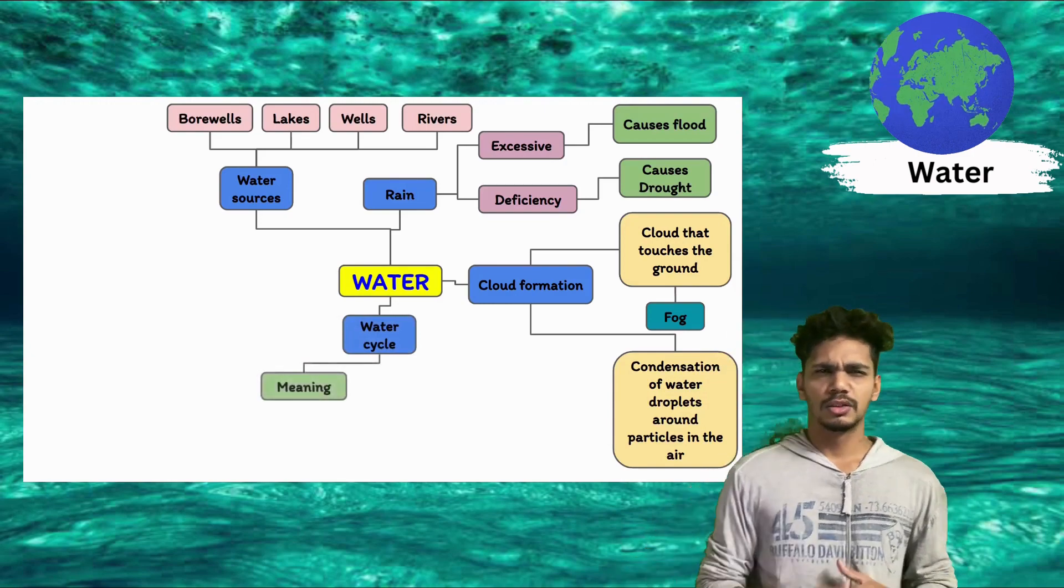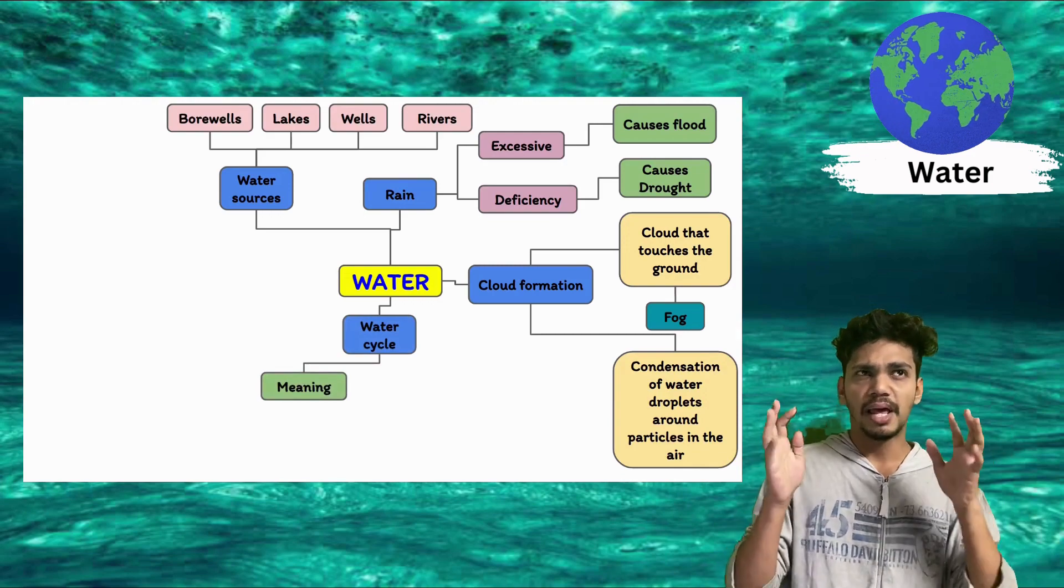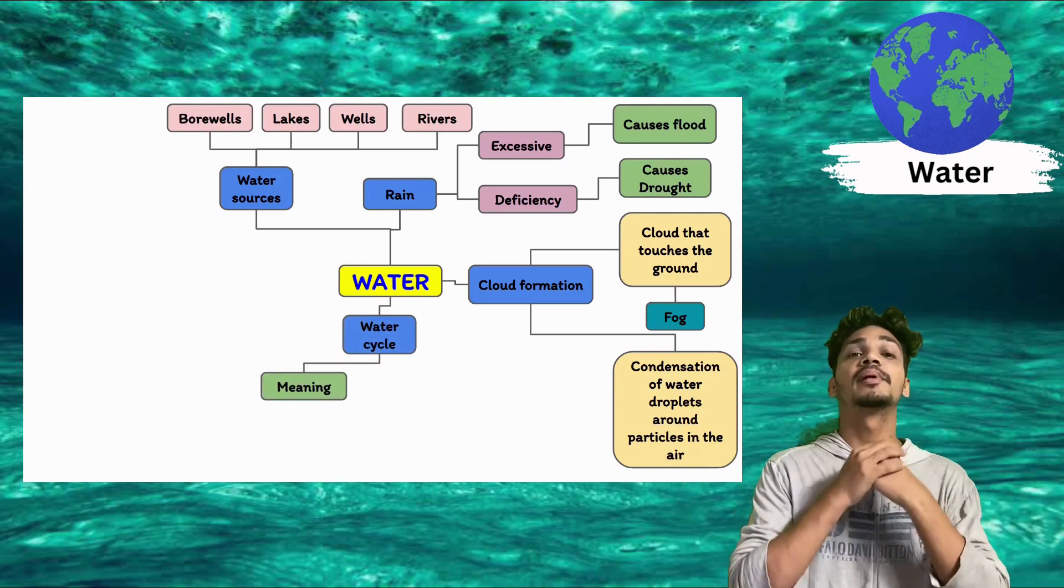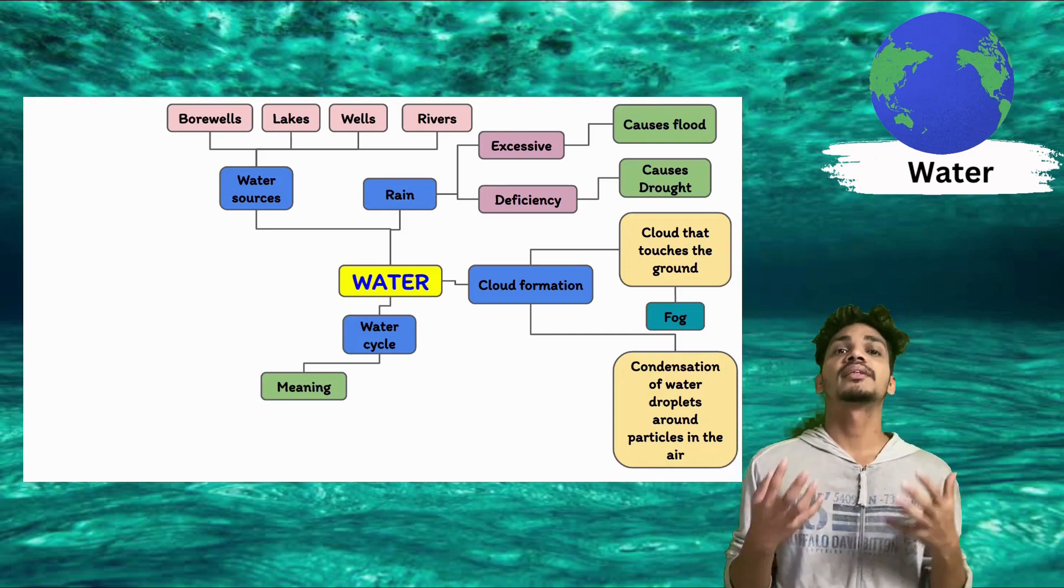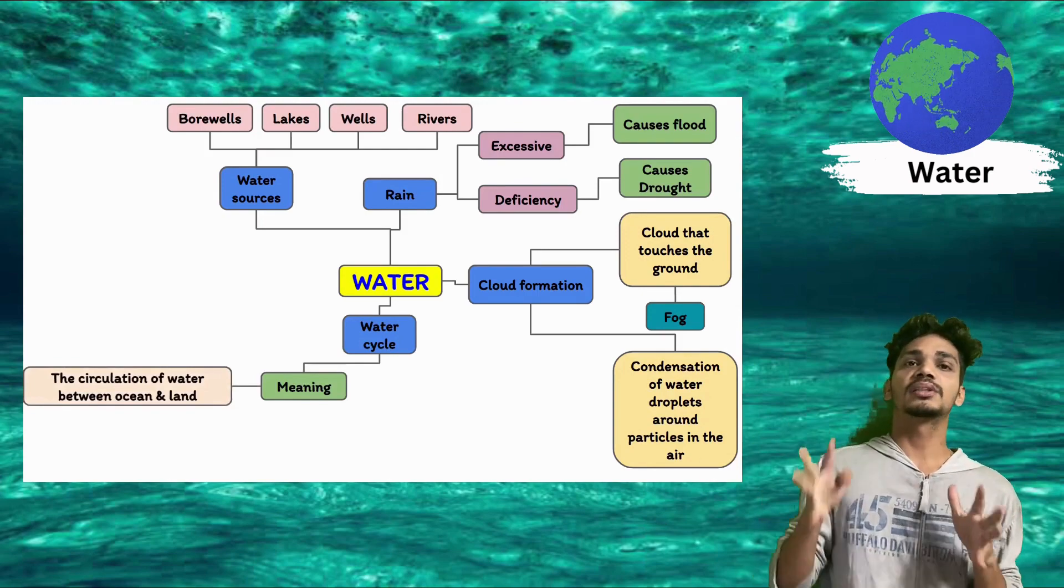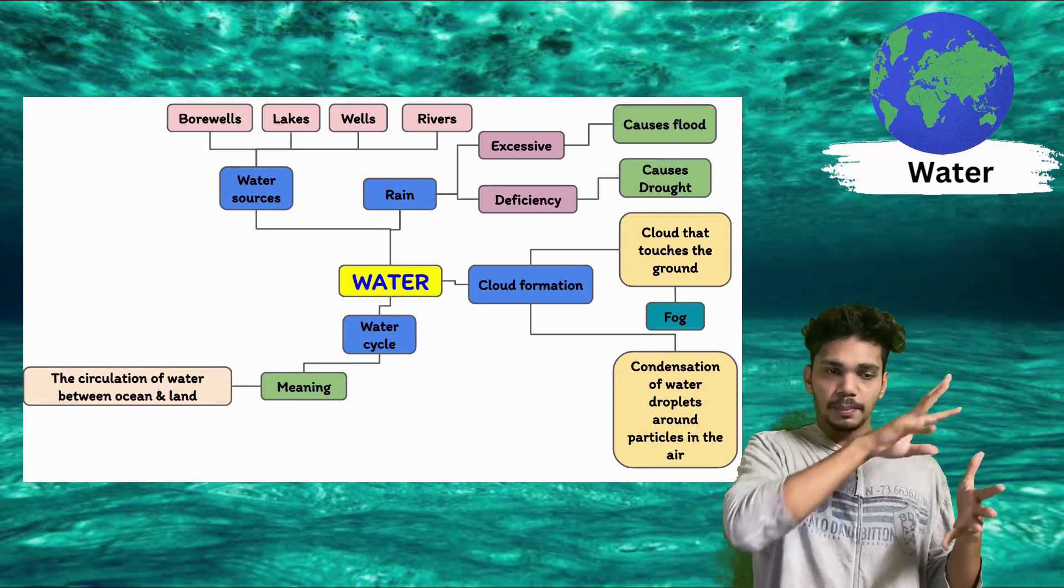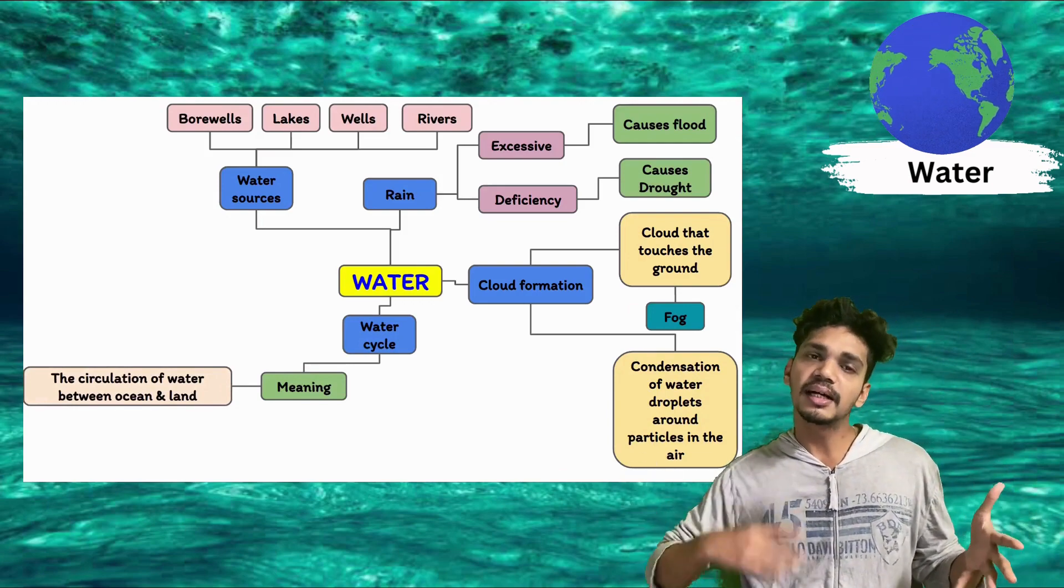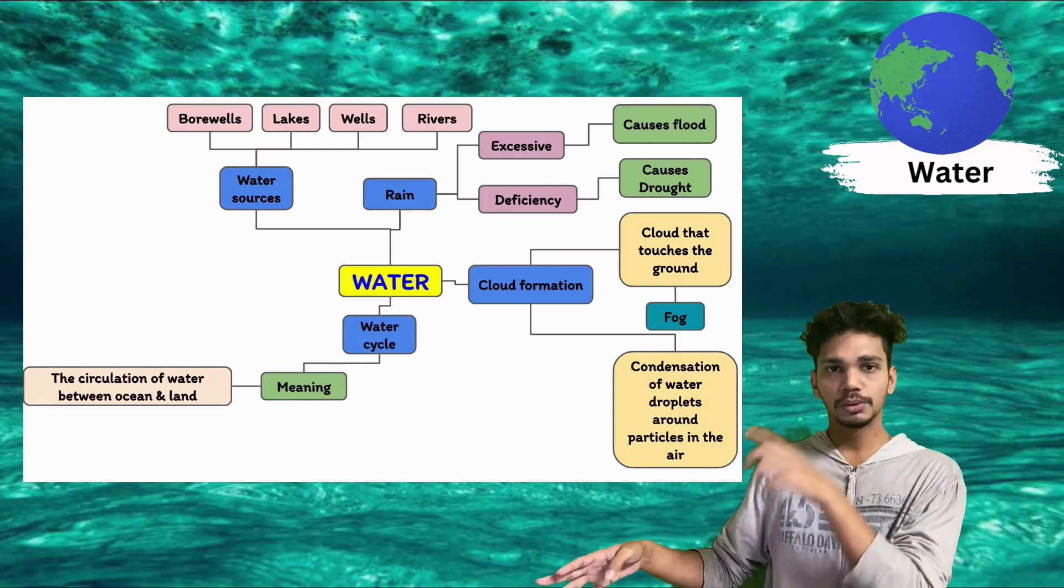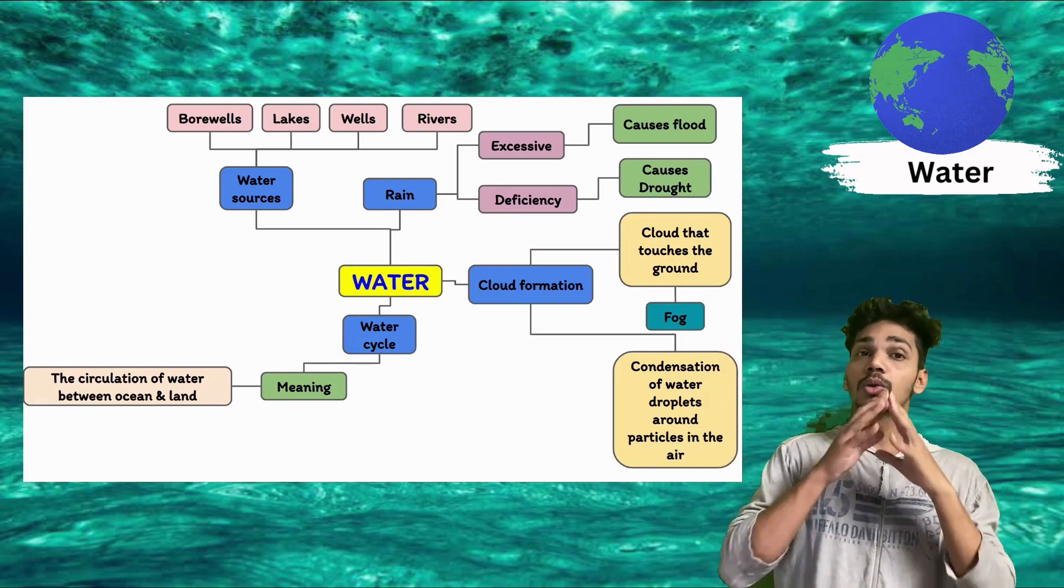Now, water cycle. So water cycle - the amount of water present on planet Earth will be the same? Yes, it will be the same. Why? Because the water cycle is responsible for that. So what is the meaning of water cycle? The circulation of water between the ocean and the land. How will it go, sir? There is water here. It will be water from the ground. It will be water from the river. It goes to the ocean, meets the ocean. And then from ocean, evaporation next. So continuous cycle will be there.